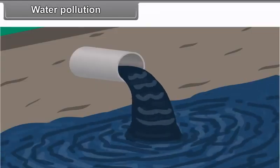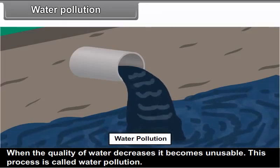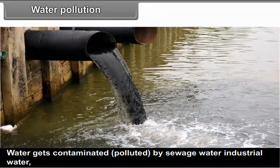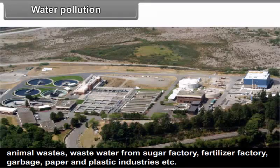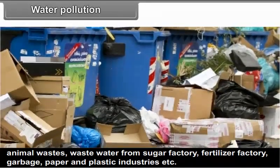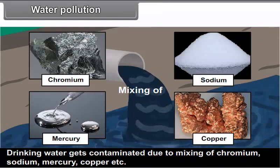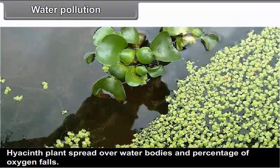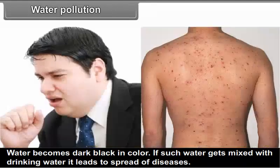Water pollution: When the quality of water decreases, it becomes unusable. This process is called water pollution. Water gets contaminated or polluted by sewage water, industrial water, animal wastes, waste water from sugar factories, fertilizer factories, garbage, paper and plastic industries, etc. Drinking water gets contaminated due to the mixing of chromium, sodium, mercury, copper, etc. Hyacinth plant spreads over water bodies and the percentage of oxygen falls, making the water dark black in color. If such water gets mixed with drinking water, it leads to the spread of diseases.